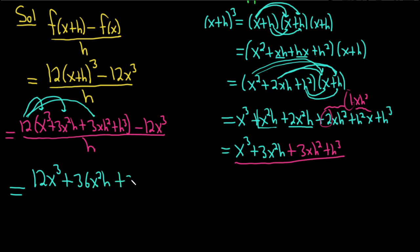And then 12 times this, same thing, will give us 36xh squared. And the last one would be 12 times h cubed, which will just be 12h cubed. And we still have this piece here, this minus 12x cubed. And all of this is all being divided by h.